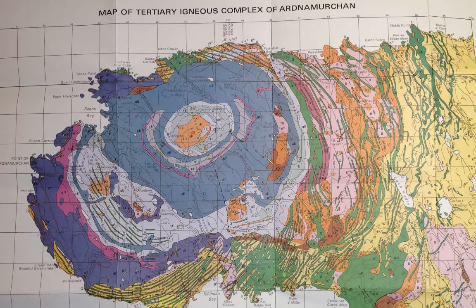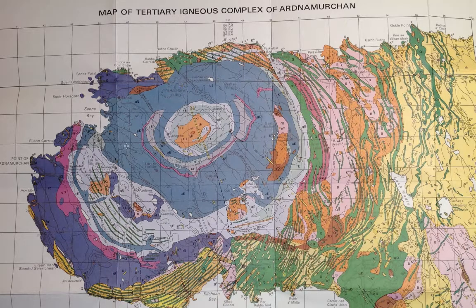Right in the centre here would have been where the volcano was — that's the volcanic centre. And this ring here is the Great Eukrite.